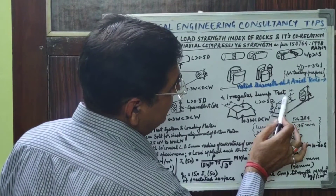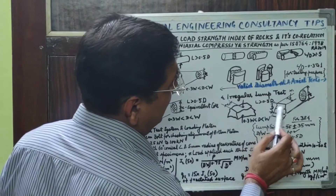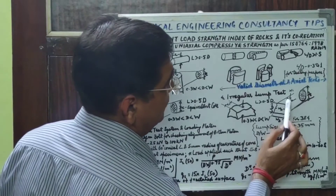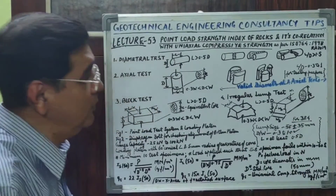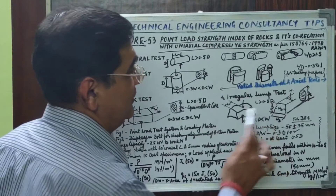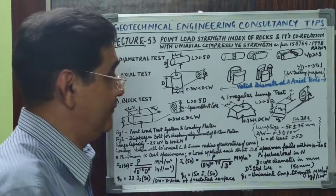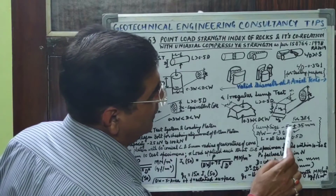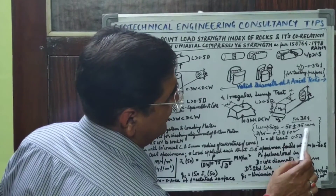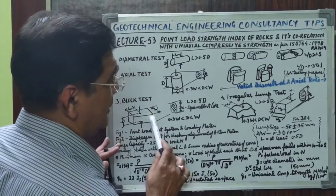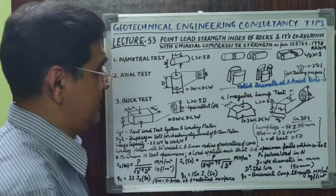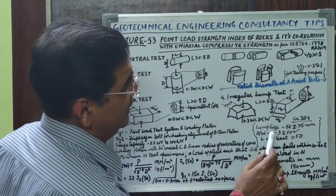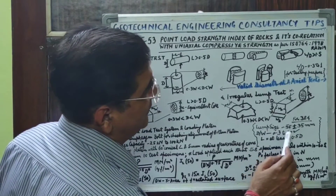For the irregular lump test, you have to measure the width of the broken sample in at least three dimensions specified as W1, W2, and W3; the W used for calculation is the average of W1, W2, and W3. The code specifies that the lump size should be of the order of 52 ± 35 mm for the block or lump test, and the D/W ratio is defined as ranging between 0.3 and 1.